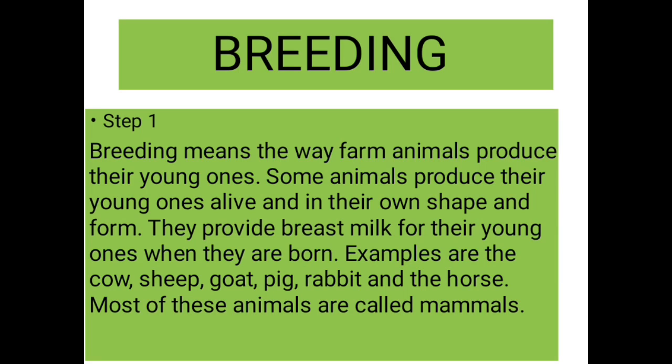Before us is the term breeding, so let's define breeding. Breeding means the way farm animals produce their young ones. There are some animals who produce their young ones alive and in their own shape and form. They provide breast milk for their young ones when they are born. Examples of such animals are cows, sheep, goats, pig, rabbits, and the horse.